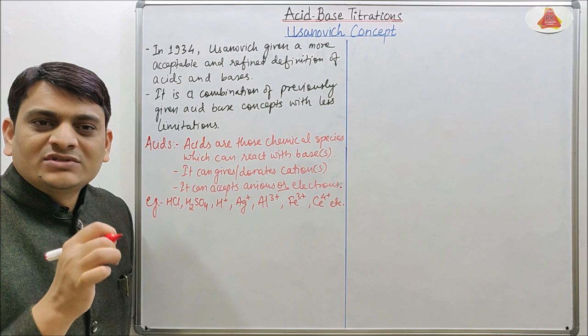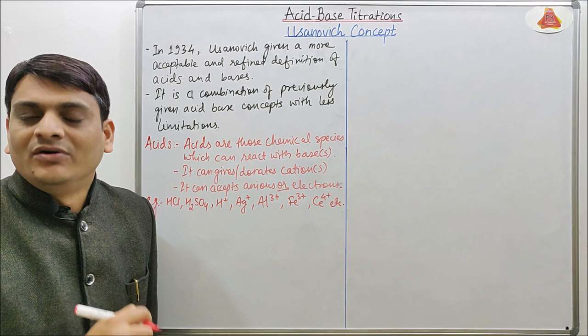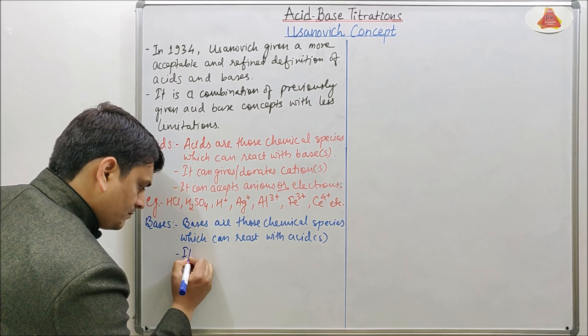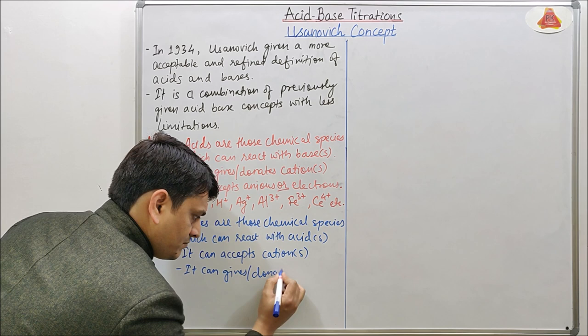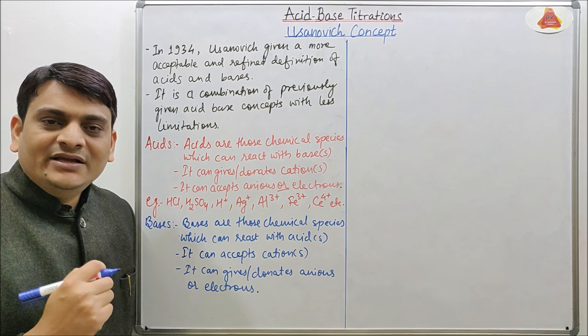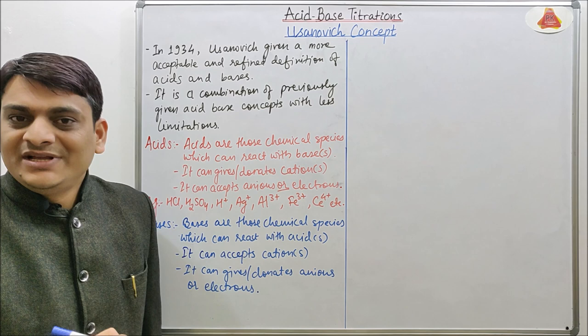Now coming to the definition of bases as per this concept. Bases are those chemical species which can react with acids, which can accept cations, or which can donate anions or electrons. Examples of bases are NaOH, NH₃, F⁻, Cl⁻, Br⁻, I⁻, Fe²⁺, Ce³⁺, etc.